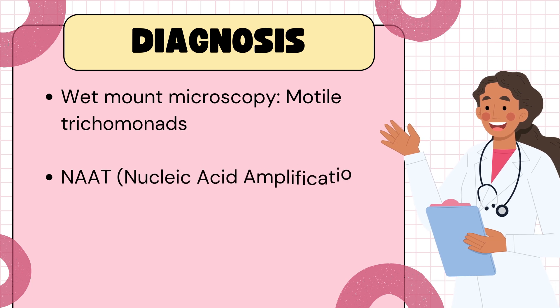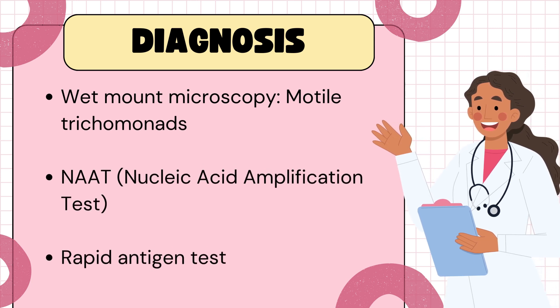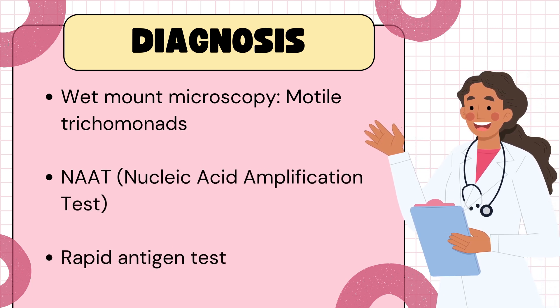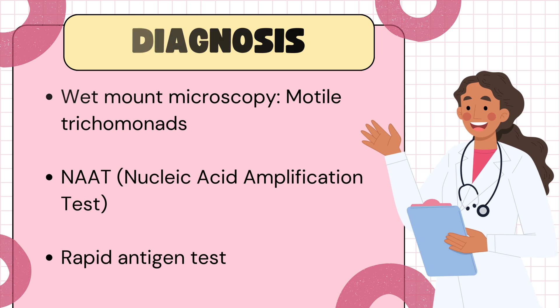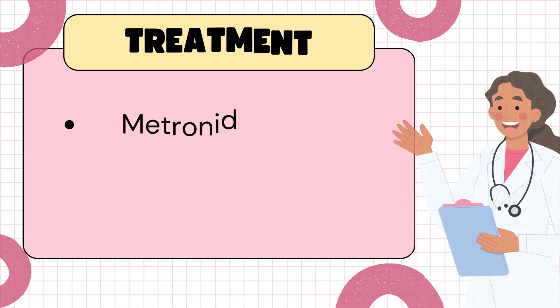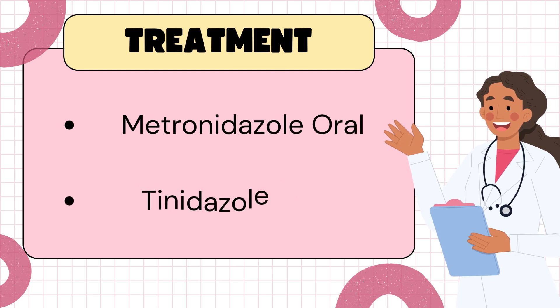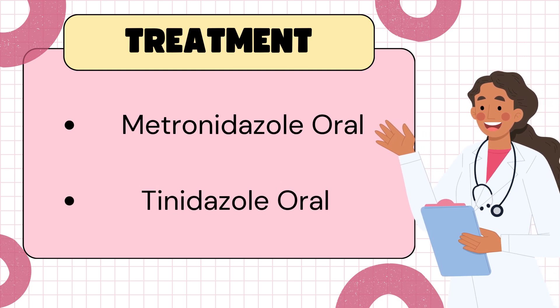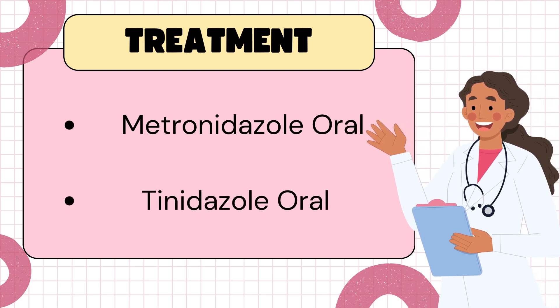To diagnose trichomoniasis, we can use wet mount microscopy where we look for motile trichomonads, nucleic acid amplification test (NAAT) which is highly sensitive and specific, and rapid antigen test which is available only in some settings. To treat these patients, we can use either metronidazole or tinidazole. Importantly, we must treat both partners to avoid reinfection, and advise sexual abstinence until treatment is complete.